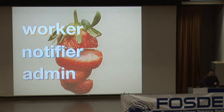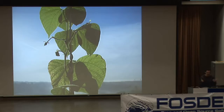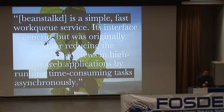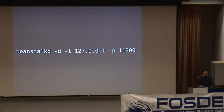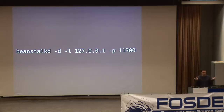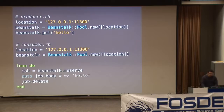Now that we've split up the monitoring life cycle, let's look at the individual components Flapjack uses. First we need to look at BeanstalkD, the messaging transport system that makes all this possible. BeanstalkD is a simple, fast work queue service that lets you run time-consuming tasks asynchronously. It's written in C, based on the memcache protocol, so it's very lightweight. You install it using your distribution's package manager and start up a daemon.